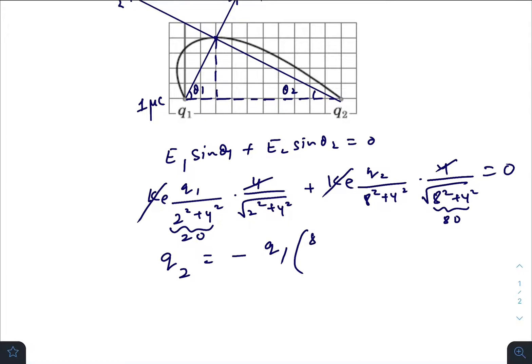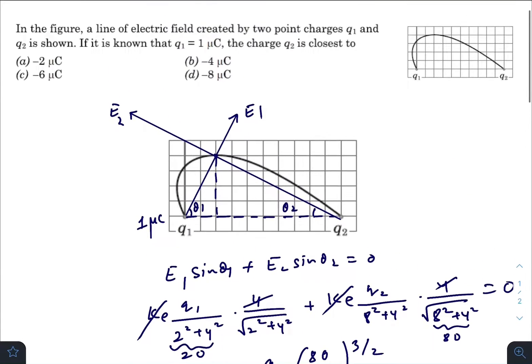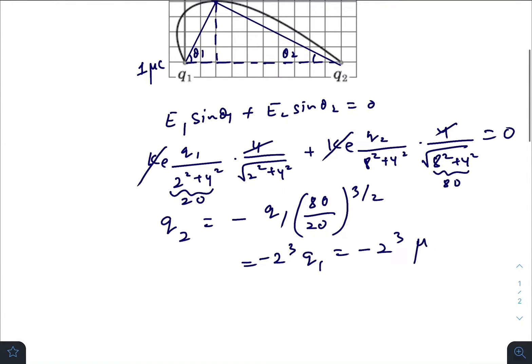So this becomes 80 divided by 20 whole to the power 3 by 2. So that gives you 4, 2 squared, 2 cubed q1. So the answer is 2 cubed times 1 microcoulomb, so minus 8 microcoulomb. Option B is the correct answer.